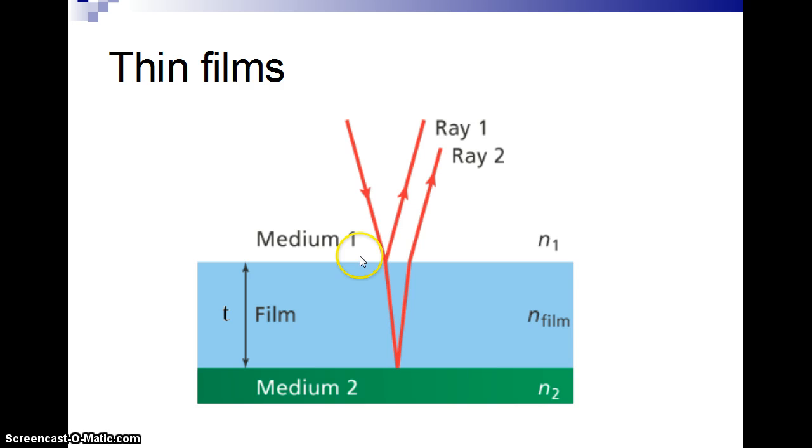So here, thin film interference is something, I'll show you a picture here in a moment, that you should be familiar with. Light kind of travels through. Some of it is going to reflect off the first surface. Some of it's going to go through and reflect off the opposite surface of the film, bubble or oil on water, something like that.